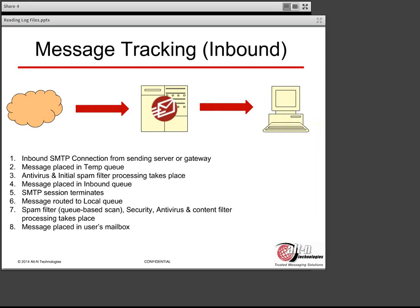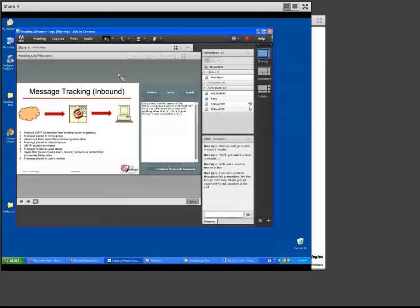Let's go over the steps that a message takes when it's being sent inbound from an external source — say, somebody from Gmail is sending an email to one of your local users. The path it takes is: first, an inbound SMTP connection is established from the sending server or gateway. The message is then placed into a temporary queue where antivirus and initial spam filtering processing takes place. From there it goes into the holding queue, and then the SMTP session is terminated. From that point it is routed to the local queue, the spam filter processes it again using a queue-based scan, and then antivirus and content filtering also take place, at which point the message is placed in the user's mailbox. Let me show you a demonstration of what I'm referring to.